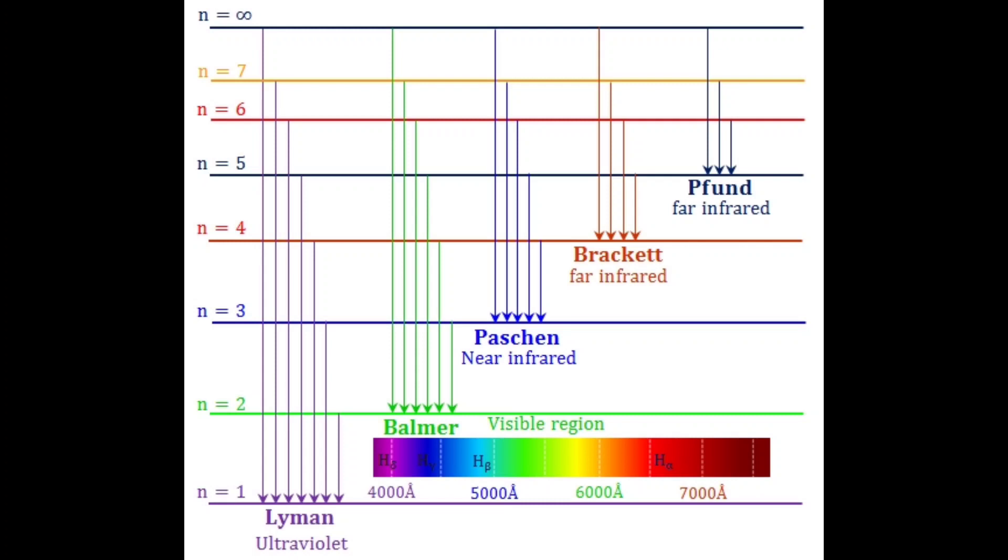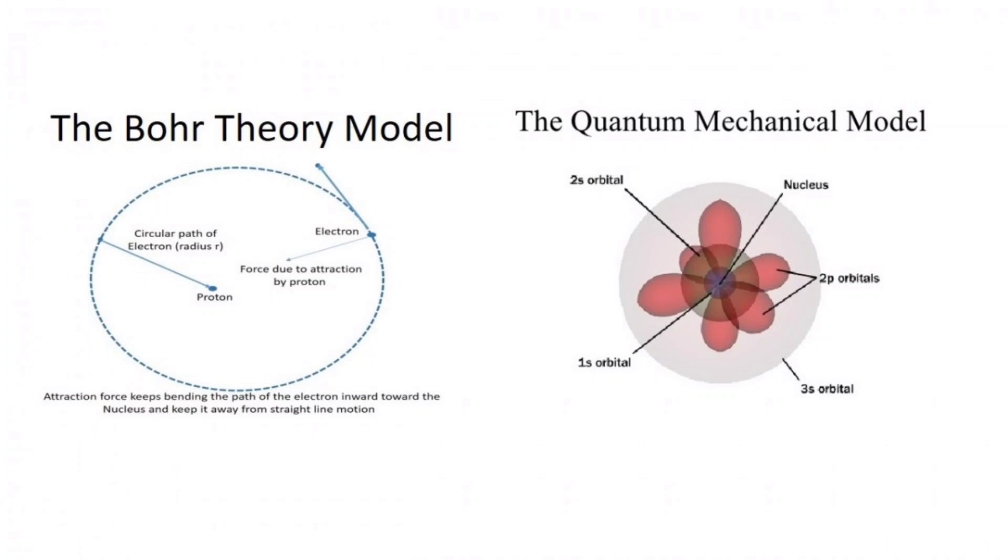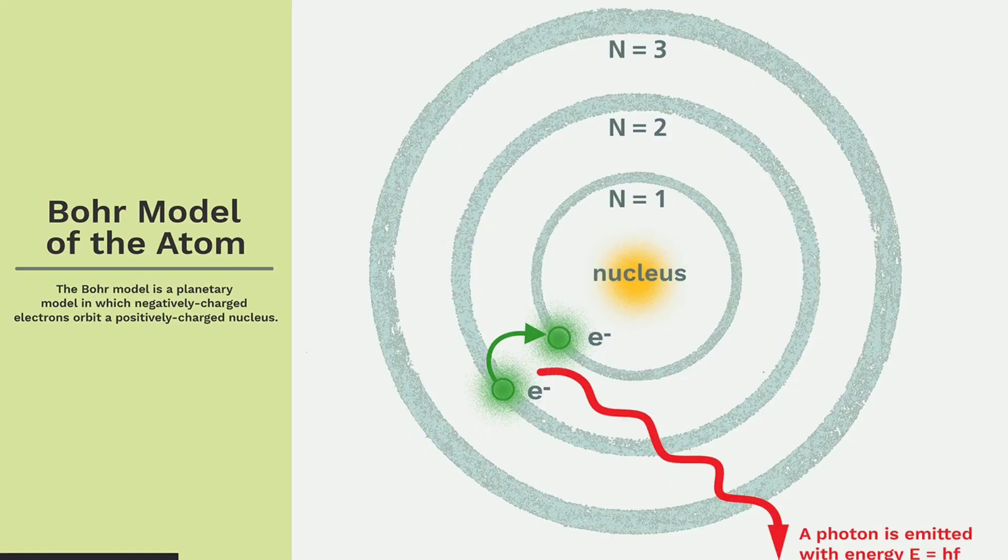Bohr could account for the series of discrete wavelengths in the emission spectrum of hydrogen. He proposed light radiated from the hydrogen atoms only when the electron made a transition from an outer orbit to one closer to the nucleus. The energy lost by the electron in the abrupt transition is precisely the same as the energy of the quantum of emitted light.